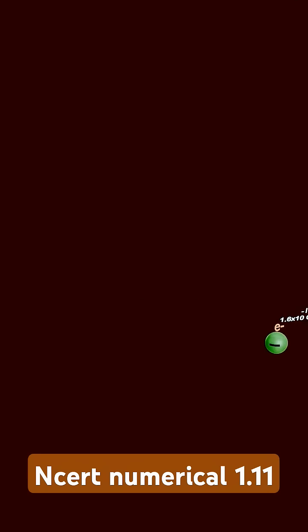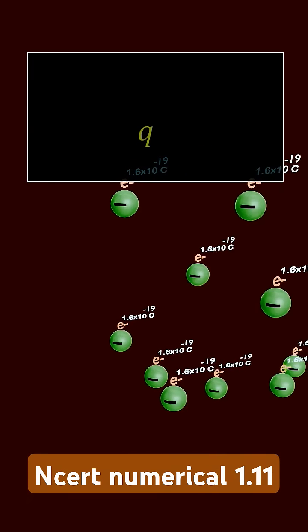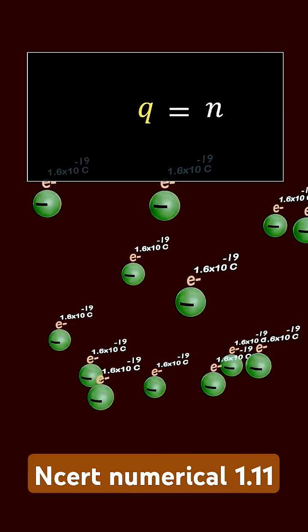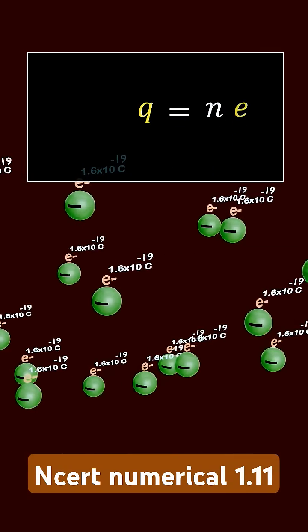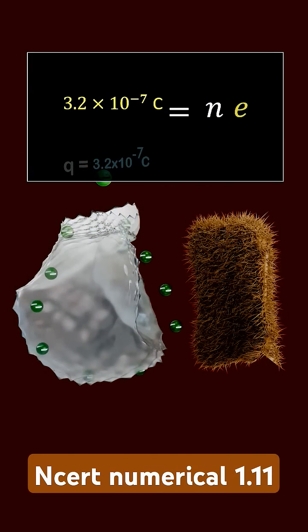We know that charge is quantized, meaning it always comes in packets of electrons. From charge quantization, the charge is always an integer multiple of the elementary charge of an electron. To find the number of electrons transferred, we divide the total charge gained by polythene by the charge of one electron.